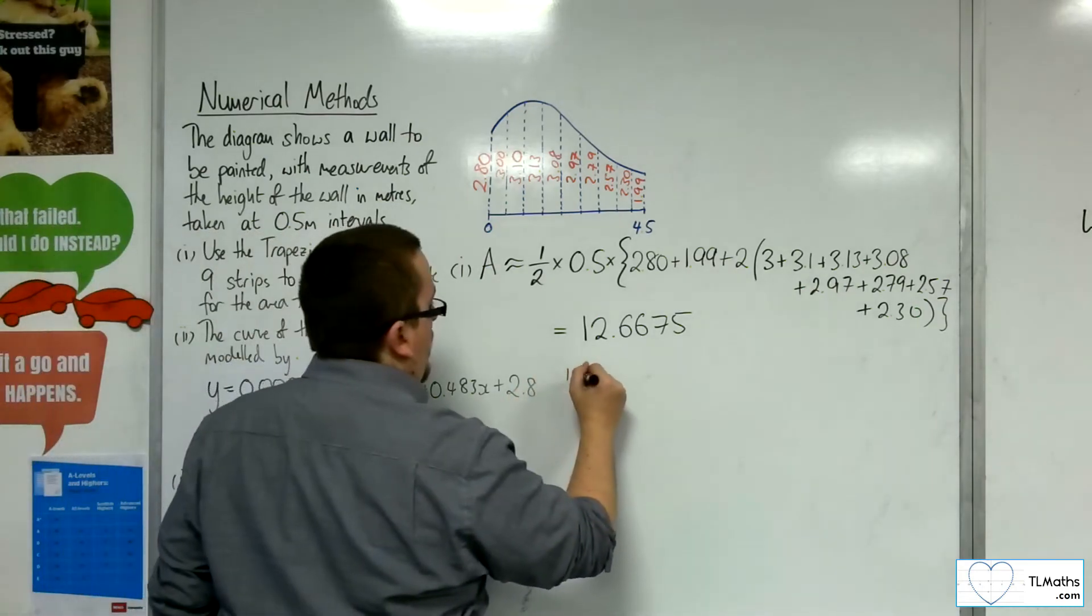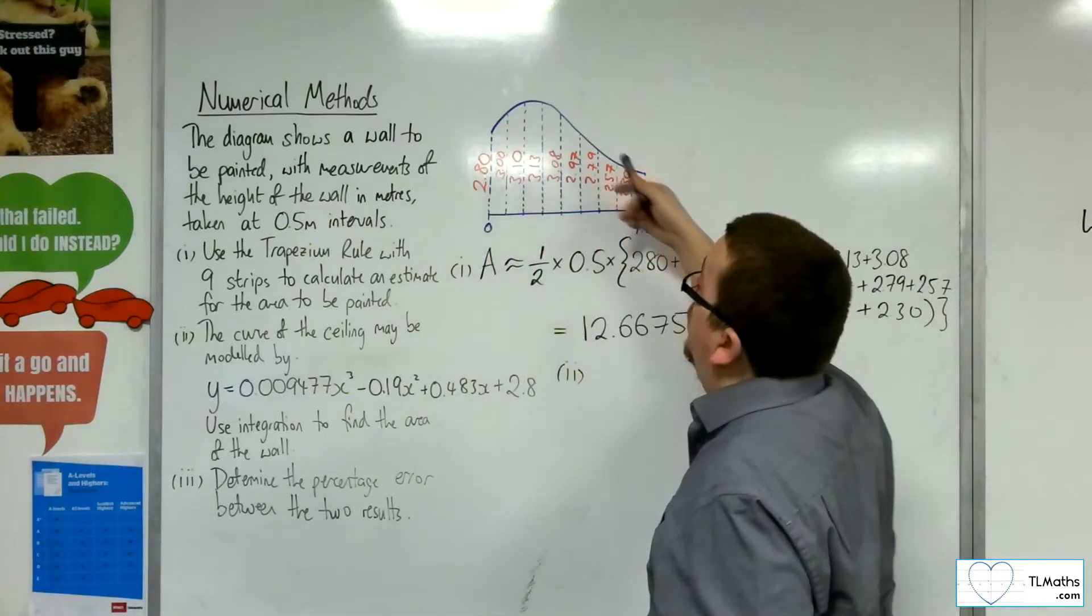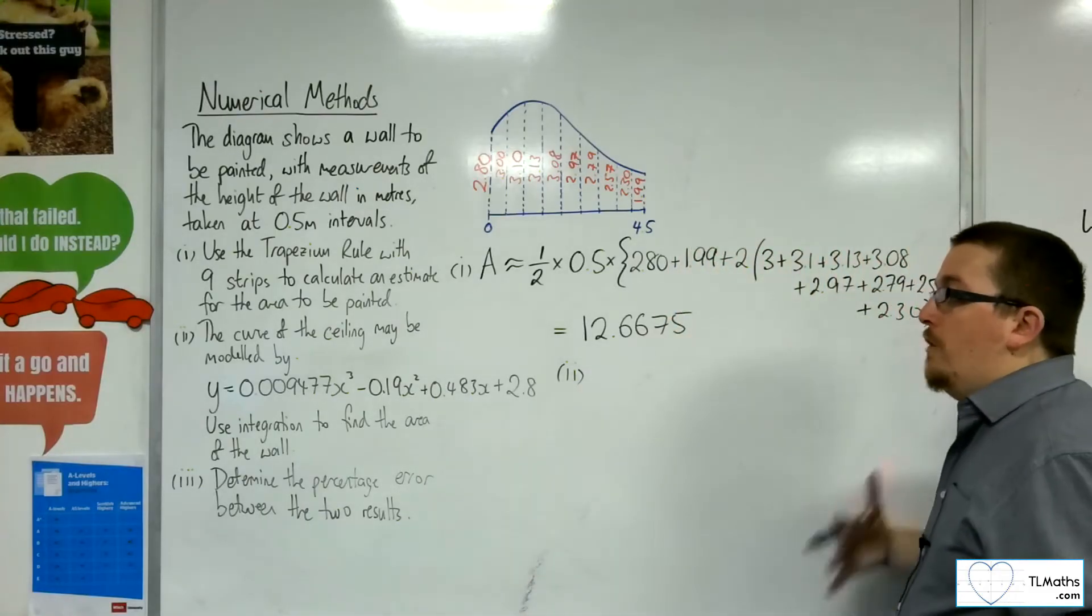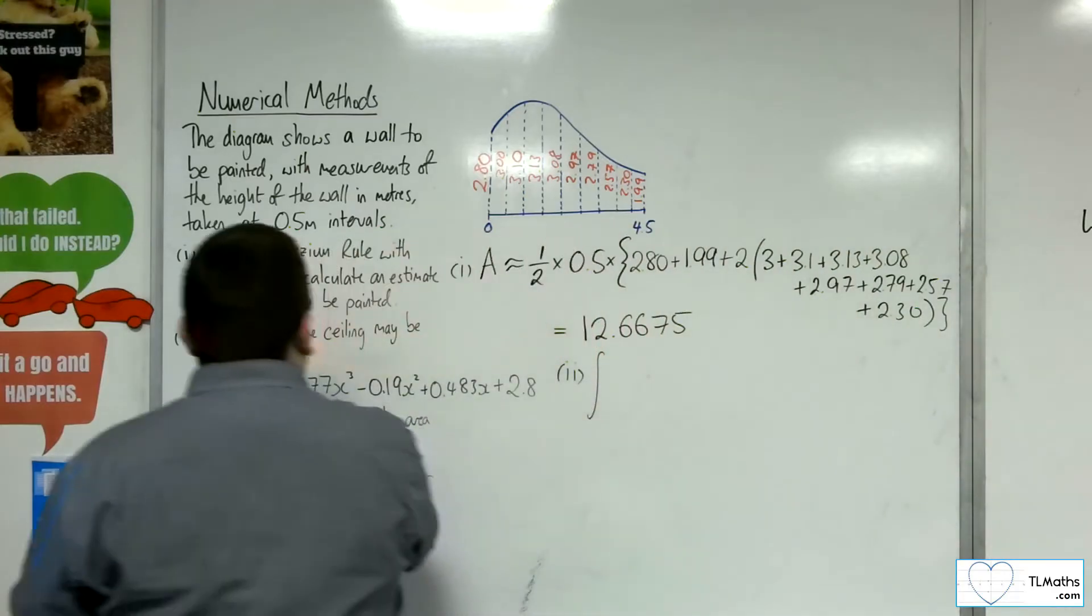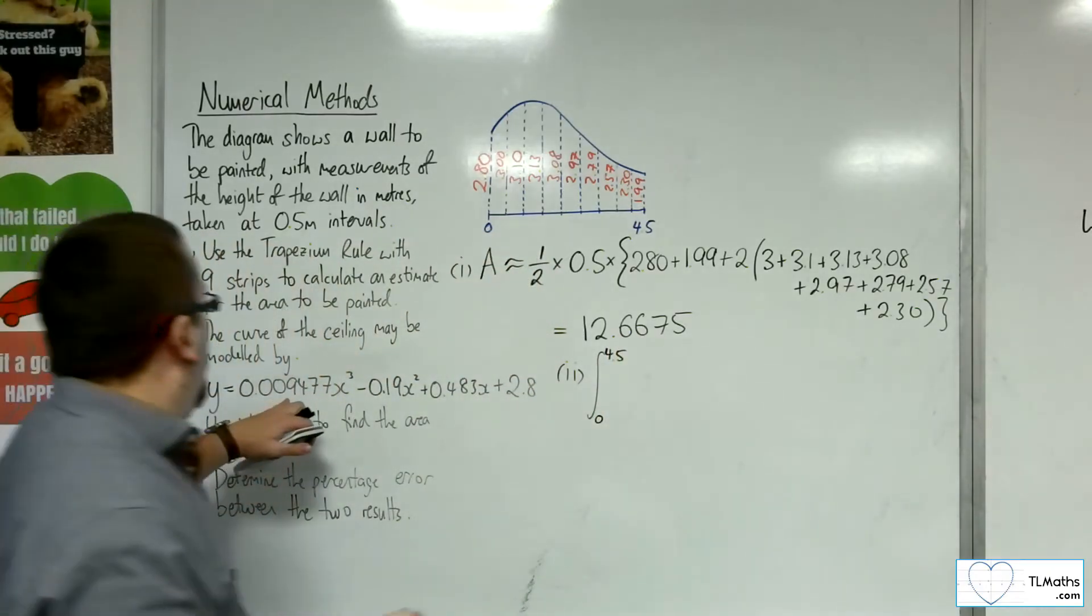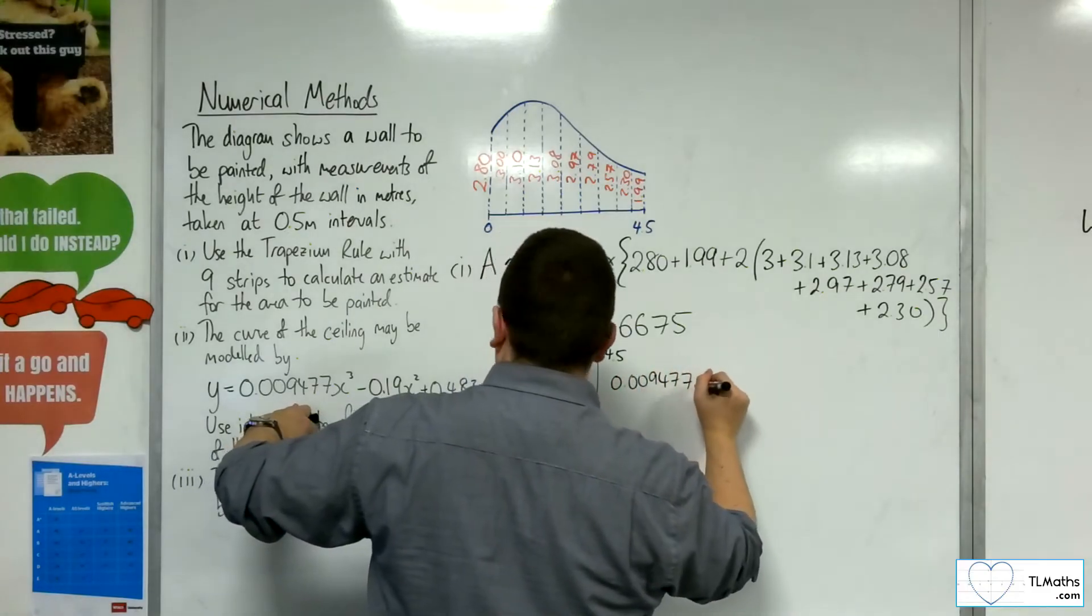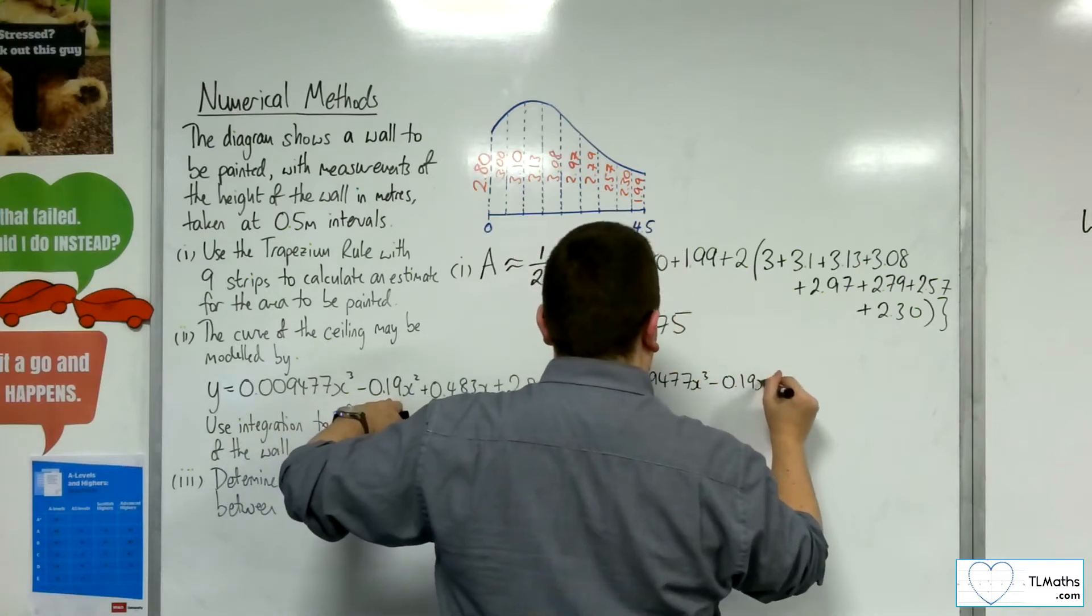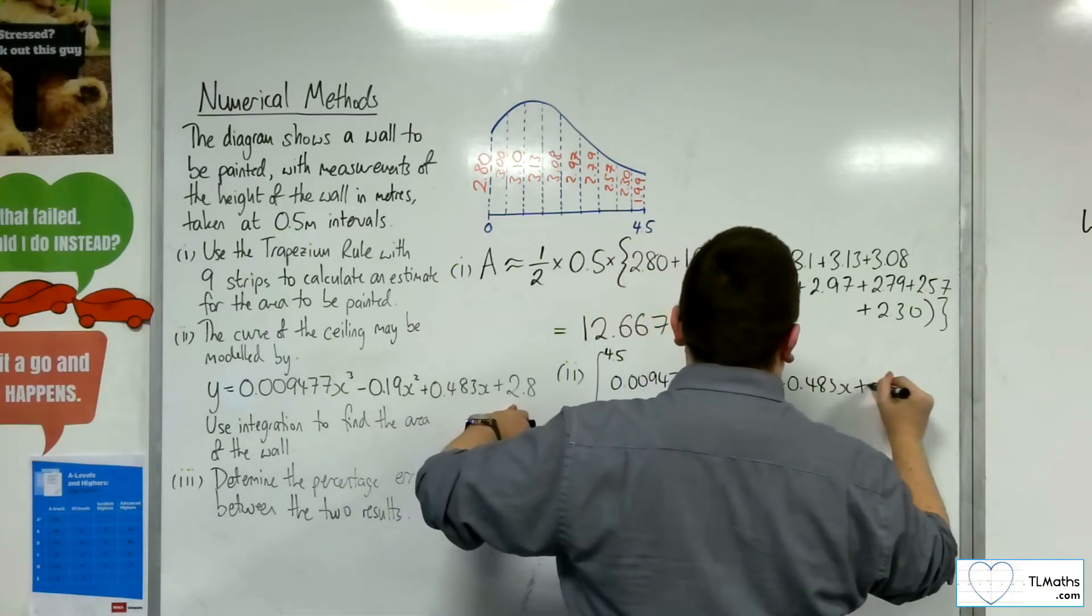Now we're told that the curve of the ceiling, that curve there, may be modeled by this cubic equation. Use integration to find the area of the wall. So I want to integrate this function between 0 and 4.5. I'm going to get